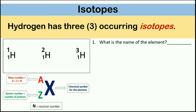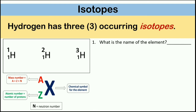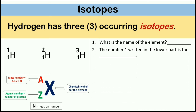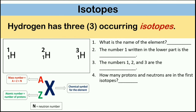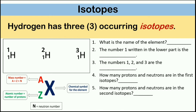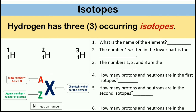We have here questions to answer. Number 1: What is the name of the element? Number 2: The number 1 written in the lower part is the blank. Number 3: The numbers 1, 2, and 3 are the blank. Number 4: How many protons and neutrons are in the first isotope? Number 5: How many protons and neutrons are in the second isotope? Number 6: How many protons and neutrons are in the third isotope?